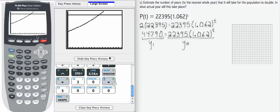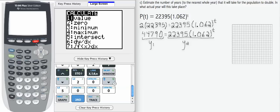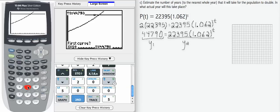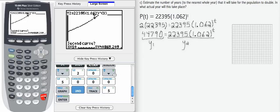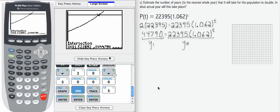To find the intersection, I'm going to use 2nd, calc, and then number 5 is intersect. I'm asked the series of questions: first curve, enter, second curve, enter, guess, ignore but click enter, and then I obtain my intersection, which is 11.52.